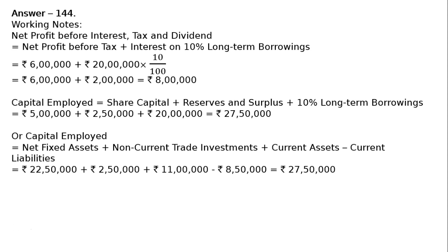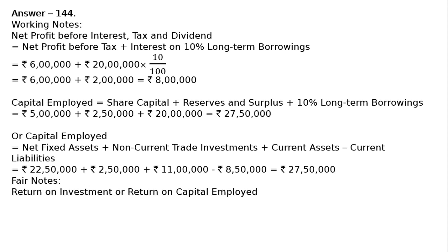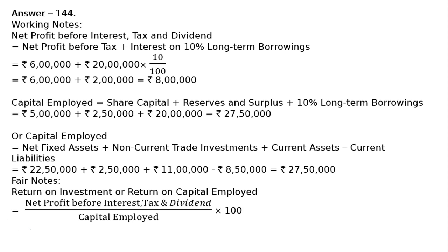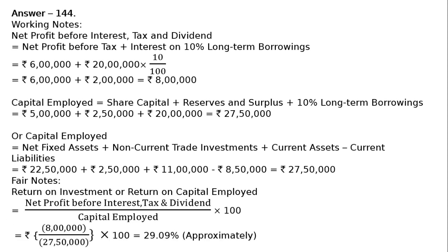Now the main formula: return on investment or return on capital employed is equal to net profit before interest, tax and dividend divided by capital employed, multiplied by 100. That is Rs. 8 lakhs divided by Rs. 27 lakhs 50,000, multiplied by 100, which equals approximately 29.09%. This is the final answer.